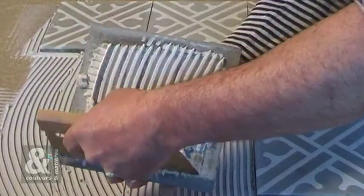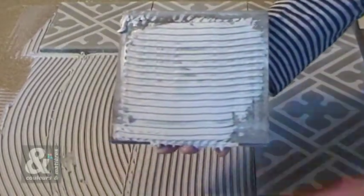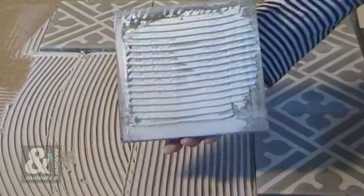To facilitate the leveling of the surface, we recommend you apply glue to tiles as well as the floor. Remove excess glue on the sides to prevent glue from getting in between the tiles.